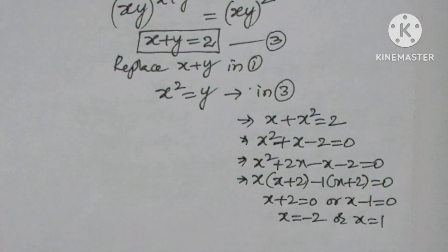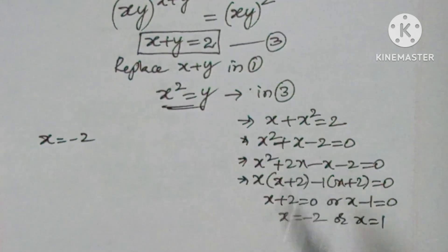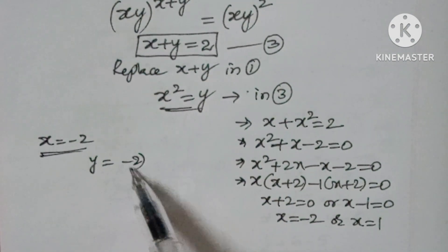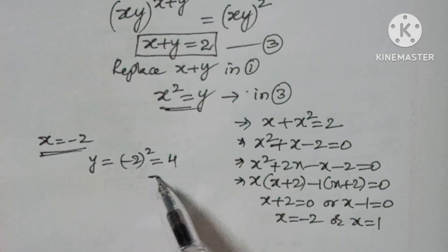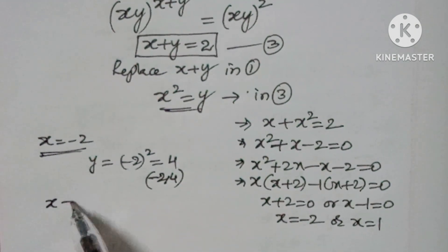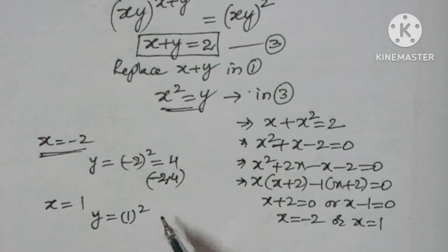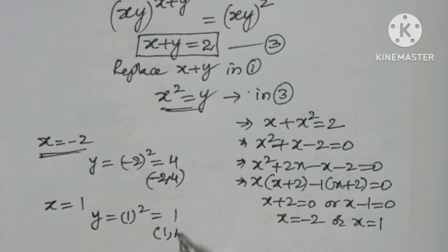Now if x equals minus 2, replace here. If x equals minus 2, then y will be minus 2 whole squared. You will get 4. So the ordered pair is minus 2 comma 4. If x equals 1, y will be 1 squared, you will get 1 only. And the ordered pair is 1 comma 1.